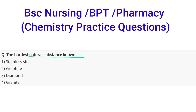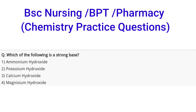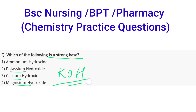The next question is: the hardest natural substance known is — options are stainless steel, graphite, diamond, or granite. The correct option is diamond. Next question: which of the following is a strong base? Options are ammonium hydroxide, potassium hydroxide, calcium hydroxide, and magnesium hydroxide. The correct answer is potassium hydroxide, that is KOH.